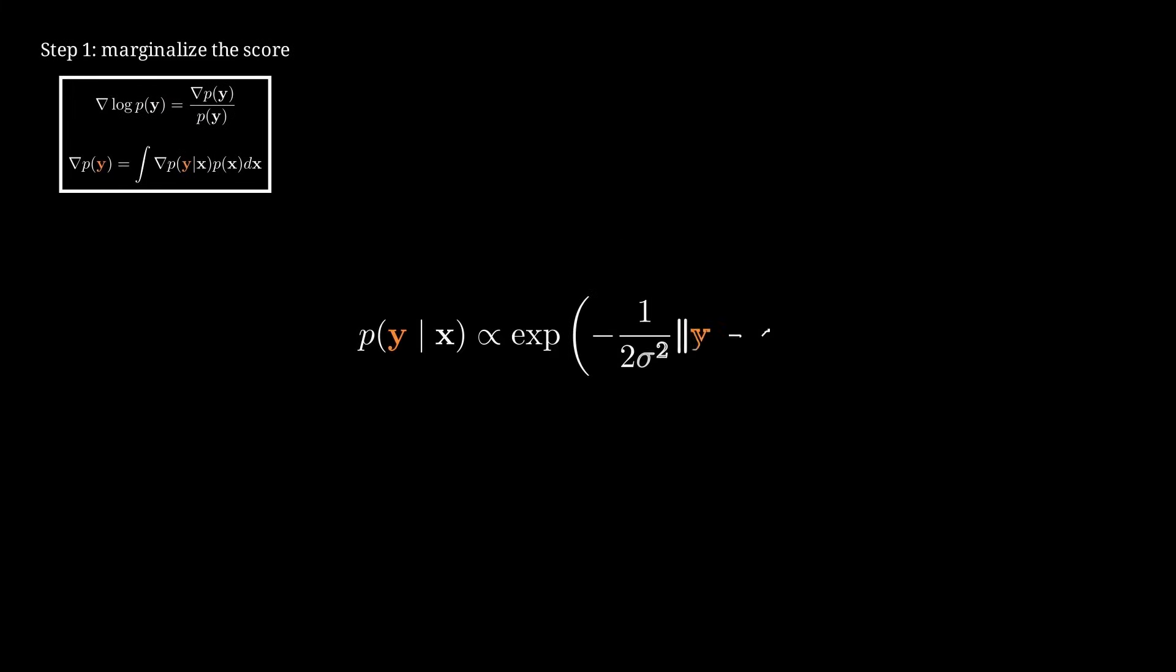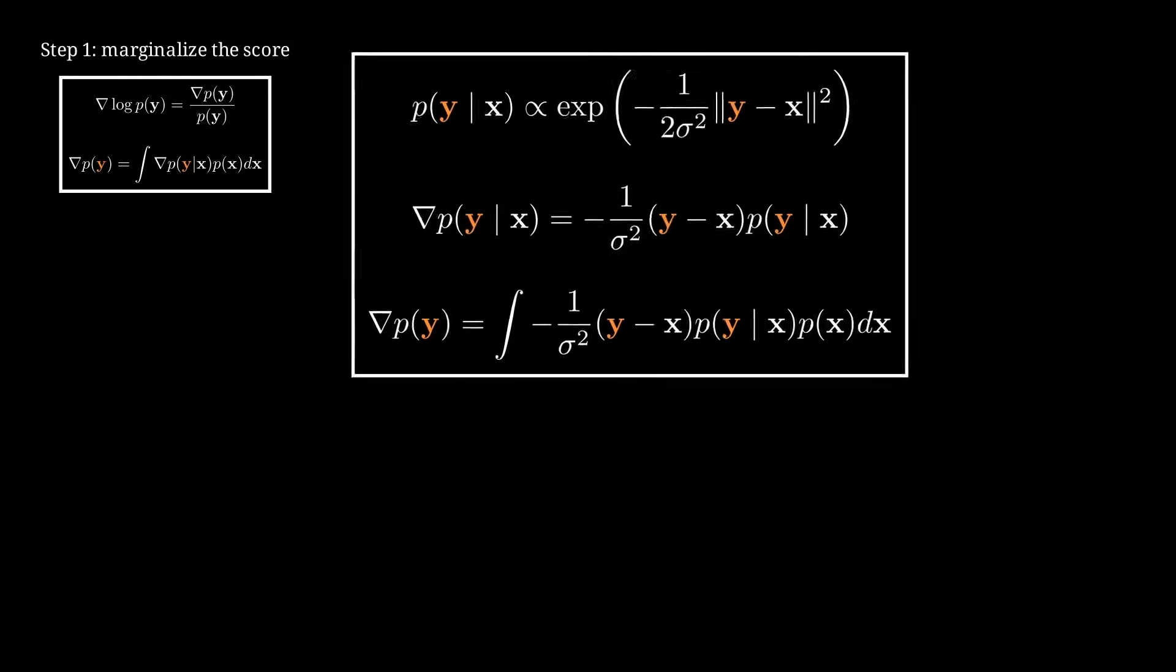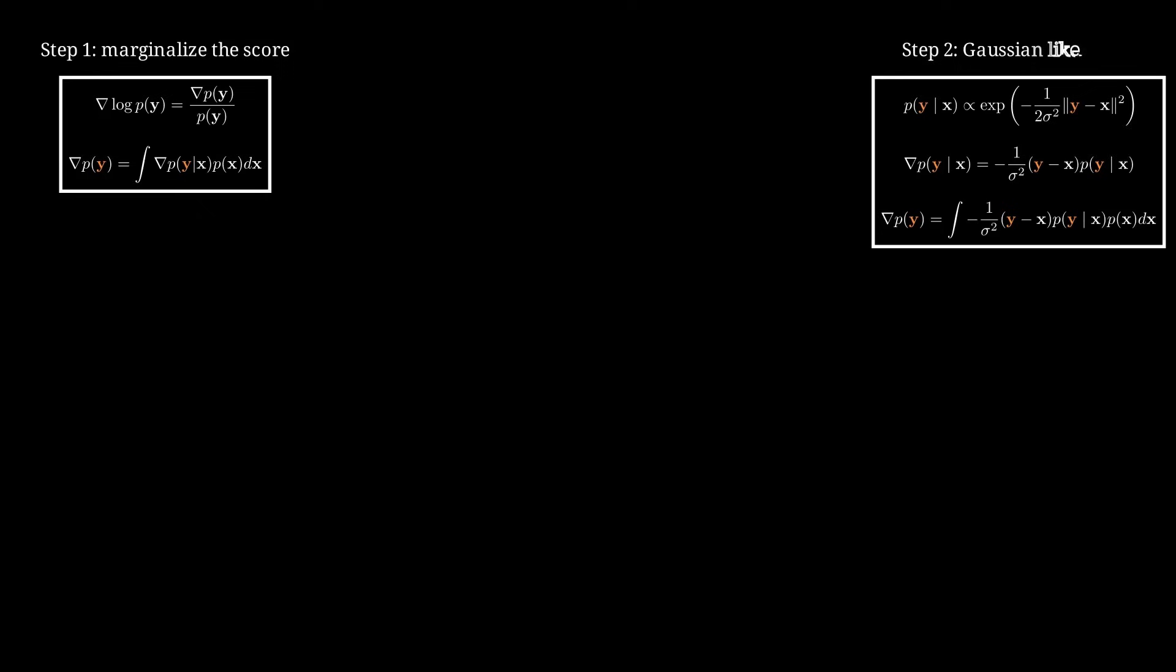Now let's recall the expression of the likelihood in the case of Gaussian noise, just in case you don't remember it. Since the likelihood is proportional to an exponential function, differentiating it shouldn't be too difficult. We simply differentiate the expression inside the parentheses, which is just a Euclidean distance, and place it in front of the exponential. Substituting this into our earlier expression for the gradient of p of y gives us this pretty scary integral. That wraps up the second step that involved replacing the likelihood with its explicit form.